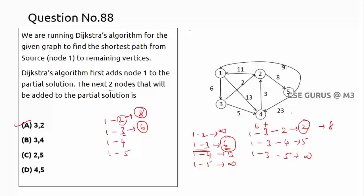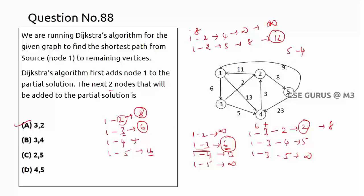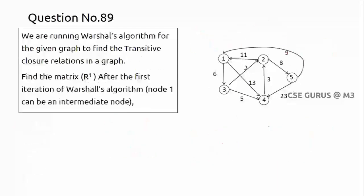Continuing from node 2: remaining unvisited are 4 and 5. 2-4 is direct? No, infinity. 2-5 is 8. So 1 to 5 via this path is 8 + 8 = 16. From node 5, there is 5-4 with cost 23, so 1 to 4 is 16 + 23 = 39. The question asks for the first two nodes after source: they are node 3 and node 2. Our answer is option E.